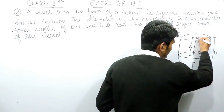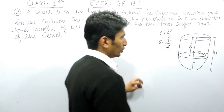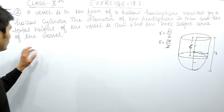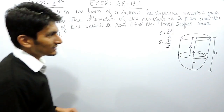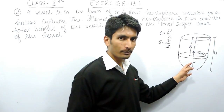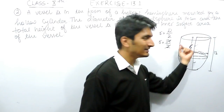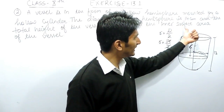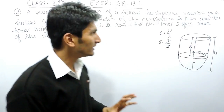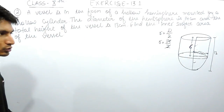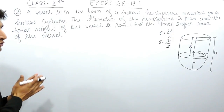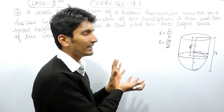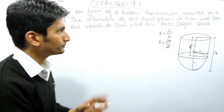Now we know all the measurements. One important thing: because this vessel is hollow and the thickness is negligible, the inner surface area will be the same as its outer surface area. So to find the inner surface area, we simply find the outer surface area.